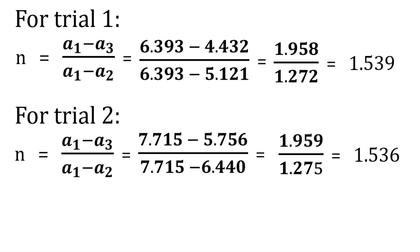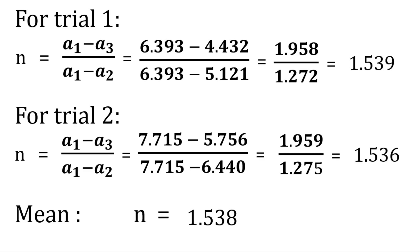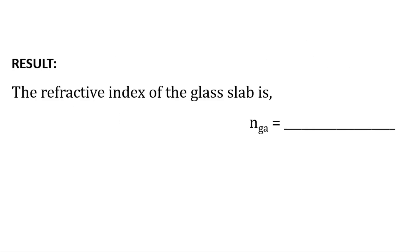Similarly, for the second trial, substituting the values and carrying out the calculation, the answer is equal to 1.536. Finally, taking the mean value of the above two readings gives 1.538. Hence, the result: the refractive index of the glass slab is 1.538. It is a unitless quantity.